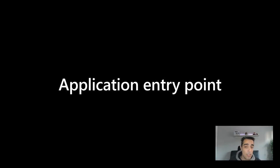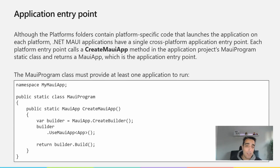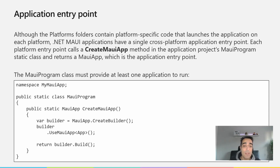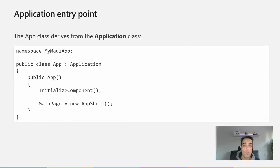Let's talk about the entry point of the application. Although the platforms folder contains platform-specific code that launches the application, .NET MAUI applications have a single cross-platform application entry point. Each platform entry point calls the CreateMauiApp method in the application project's MauiProgram static class, and returns a MauiApp with its application entry point. The MauiProgram class must provide at least one application to run.